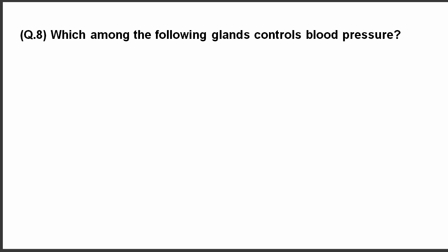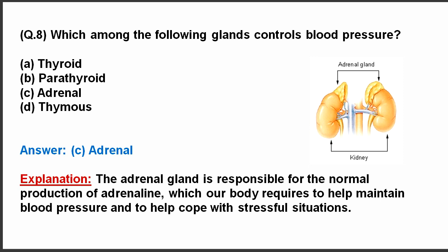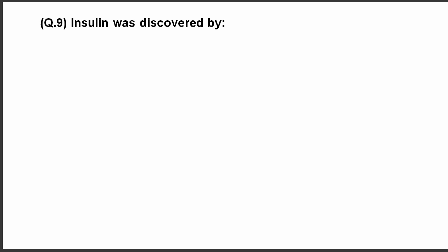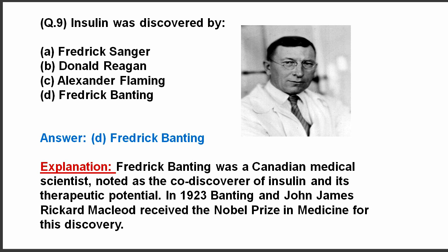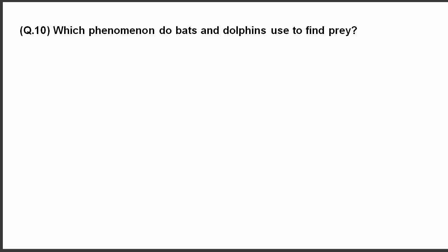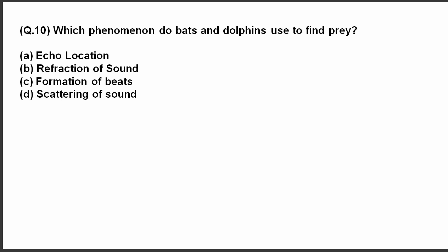Question number 8. Which among the following glands controls blood pressure? These are the options. The correct answer is adrenal. Question number 9. Insulin was discovered by? Here are the options. And the correct answer is Frederick Banting. Question number 10. Which phenomenon do bats and dolphins use to find prey? Here are the options. The correct answer is echolocation.